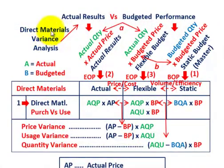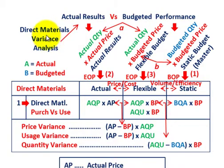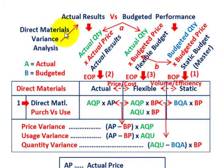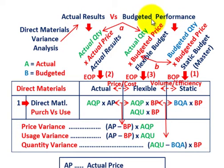What we're going to be going over here is direct materials variances. We're going to take a closer look at our direct materials variances — the price variance, usage variance, and quantity variance. In variance analysis, we're comparing our actual results for the period versus what we've budgeted or our budgeted performance.